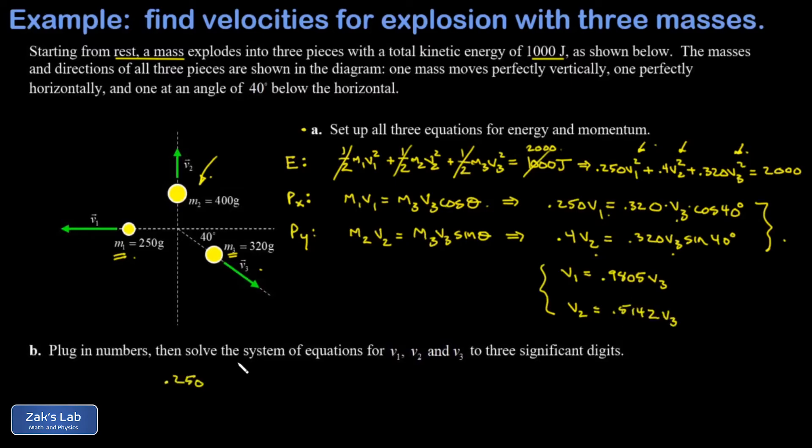Now we go ahead and sub these into the energy equation. So I have 0.250 v1 squared - that's 0.9805 v3, all squared, plus 0.4 times v2 squared - that's 0.5142 v3, all squared, plus 0.320 v3 squared, is equal to 2,000.